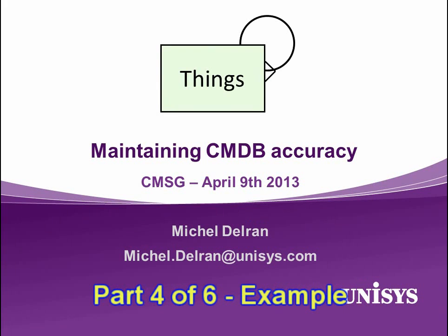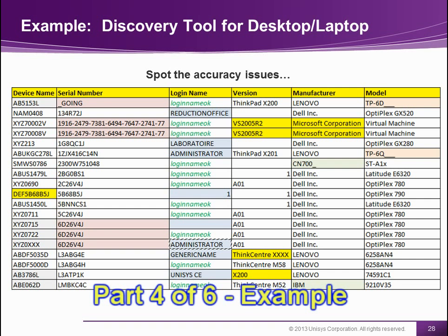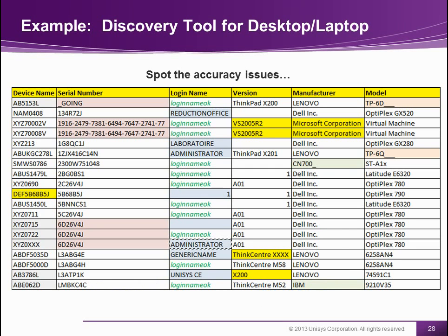Here is an example from a real elementary inventory tool. I just masked the names here because I don't want you to recognize who it is. When I put 'logging name okay,' that means the performance of the logging name was fine.